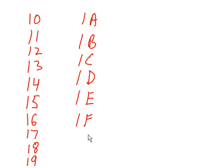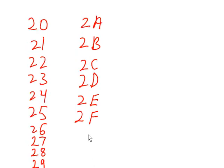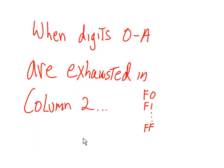To represent higher numbers, I go to column 2 and increment that number by 1. Now I have 20, 21, 22, 23, 24, all the way down to 2F. When digits 0 through A are exhausted in column 2, we get F0, F1, dot dot dot, FF.